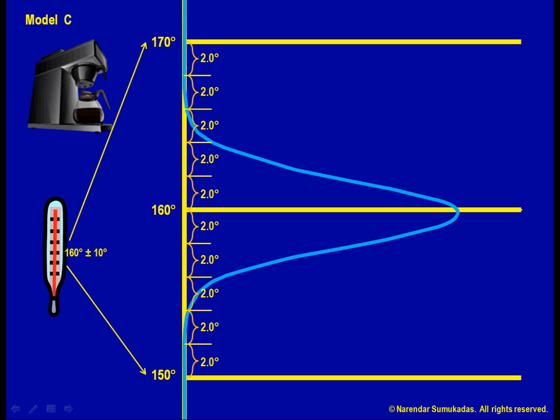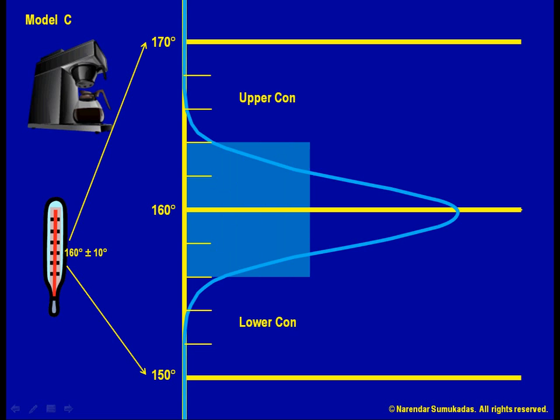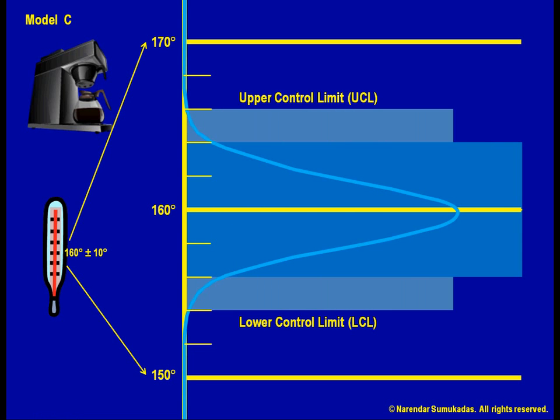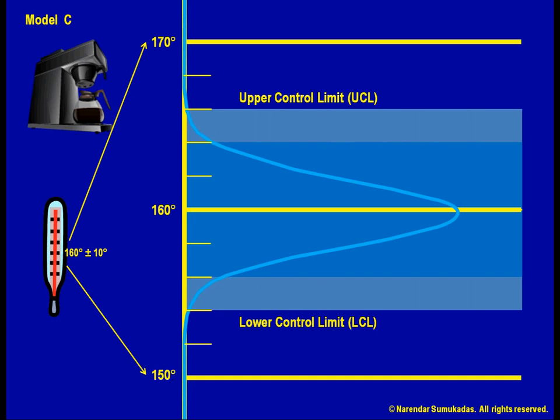As we saw earlier, this process is 5 sigma capable and will produce one defect in 2 million, and that doesn't change whether I use 2 sigma or 3 sigma control limits. The same proportion of the bell curve remains within the specifications of 150 degrees to 170 degrees when the process is behaving normally. Of course, if the process is not behaving normally, it will neither be in control nor be 5 sigma capable.